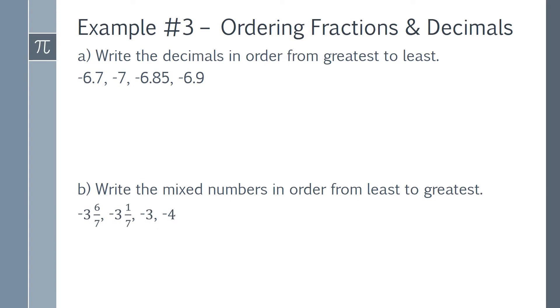Example number 3. Ordering fractions and decimals. Part A. Write the decimals in order from greatest to least. We have negative 6.7, negative 7, negative 6.85, and negative 6.9.